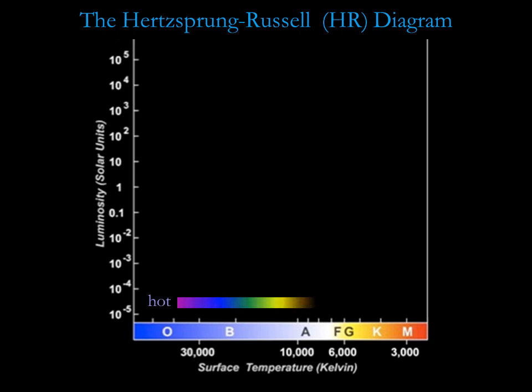The spectral type on the horizontal axis represents stellar surface temperature. On an HR diagram, the temperature decreases from left to right. Each combination on the HR diagram represents a unique combination of spectral type and luminosity. For example, our sun is spectral type G2 with a luminosity of one solar luminosity.